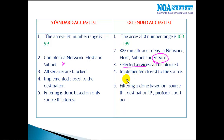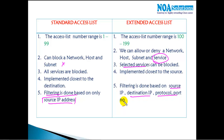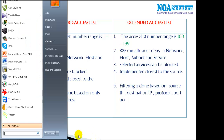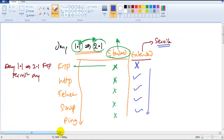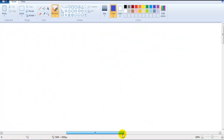Apart from that, there is one more major difference: standard ACL filtering is done based on the source address only, whereas extended ACL filtering is done based on source, destination, protocol, and port number. So extended ACL is capable of more advanced filtering than standard ACL.